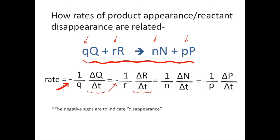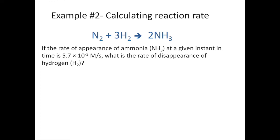If you take one over the coefficient of a reactant or product and multiply it by the rate of change of that reactant or product, you can relate that to the disappearance of any other reactant or appearance of any other product. This looks like a lot of letters — I'll show you what I mean in the next example.